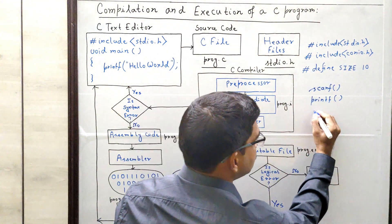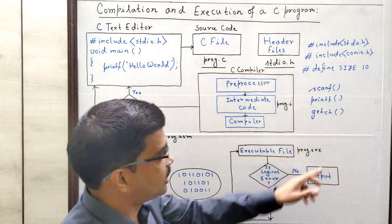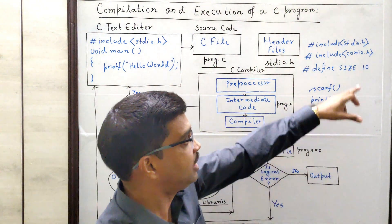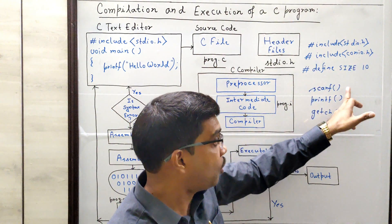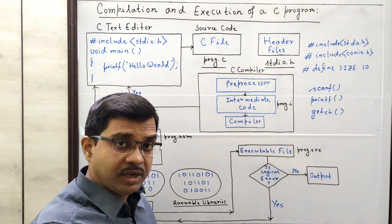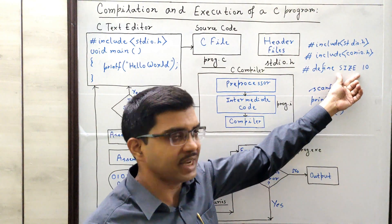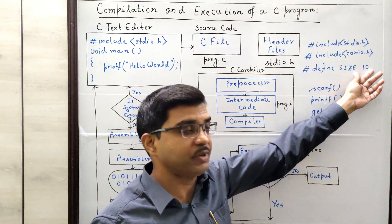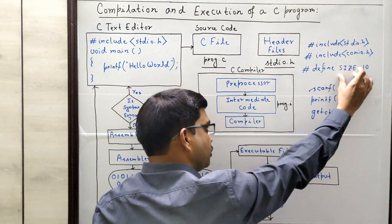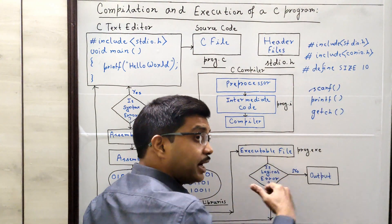Similarly, conio.h — suppose you want to call the getch function, which holds your output screen. So this function's declaration has been mentioned in that header file. Since we are going to use this header file, we are in advance taking permission from the compiler by including it, indicating that we are going to call these system-defined functions. Now what about this macro: #define SIZE 10? Wherever this symbolic constant SIZE is found in your source program, it will just be replaced by the value 10. Suppose in five different places you have used this symbolic constant — in all five places, it will be replaced by 10, and that will be done by the preprocessor.